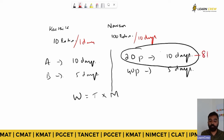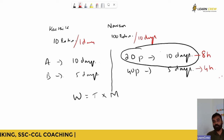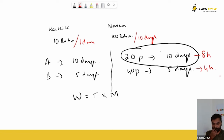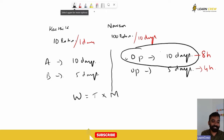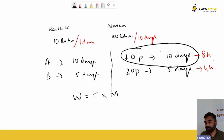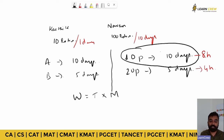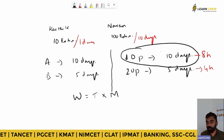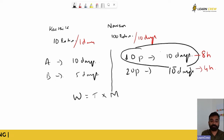Now adding hours: in these 10 days, people are working 8 hours each, and in the other case, 20 people work 4 hours each. If 10 people take 10 days at 8 hours each, and 20 people take 10 days at 4 hours each, the work done remains the same. Work done is dependent on time, number of people, and number of days.